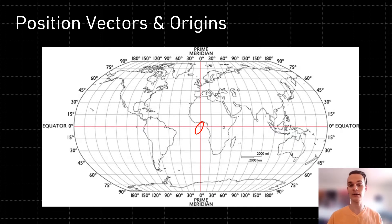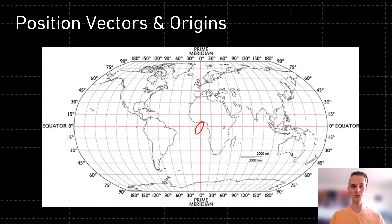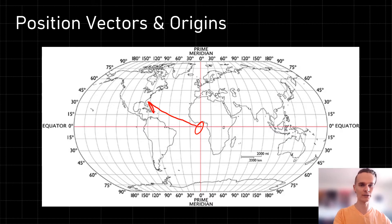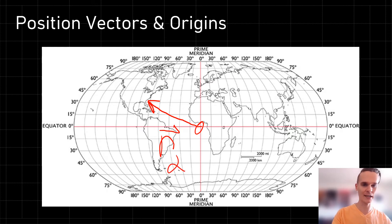Let's suppose that we tried to draw the position vector for Jacksonville on this map. We have our tail at zero latitude, zero longitude, and the tip of the position vector at the point in space that we described. Our position vector is going to look something like this, and we'll label it position vector j to indicate that it is the position vector for Jacksonville.